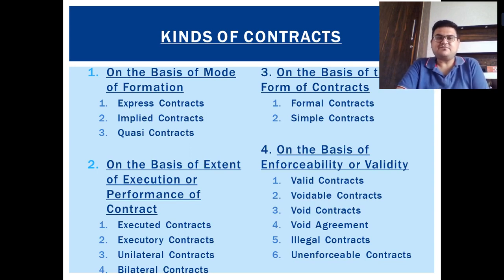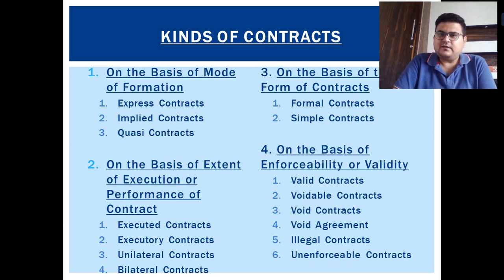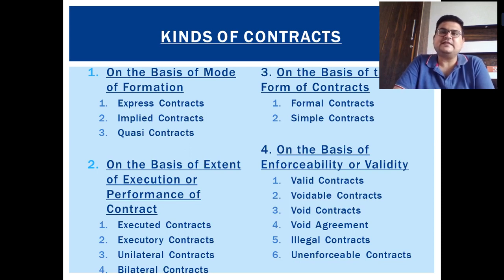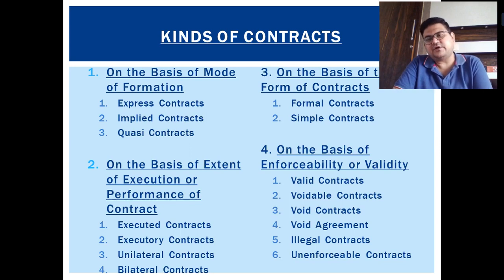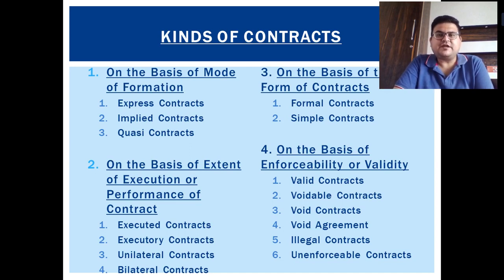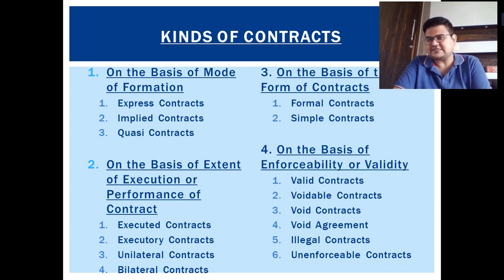On the basis of extent of execution or performance: suppose I offer to sell my Hyundai Grand i10, five years old, in mint condition, for rupees 2 lakhs. You accept but want to pay in four installments of 50,000 each, and will take the car after completing the payments. We have an agreement. Now both of us are yet to perform — I haven't handed over the car, and you haven't completed payment.